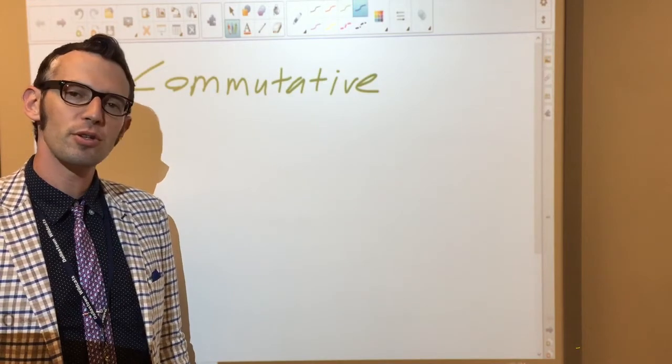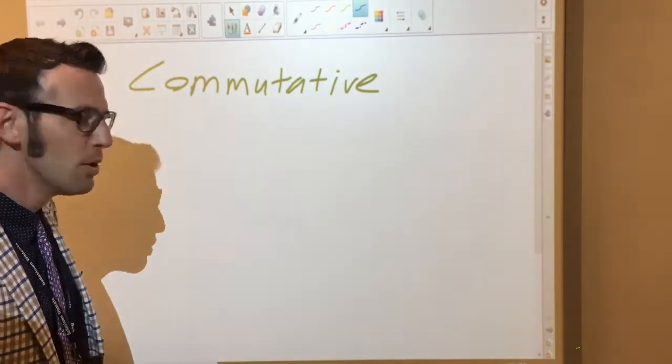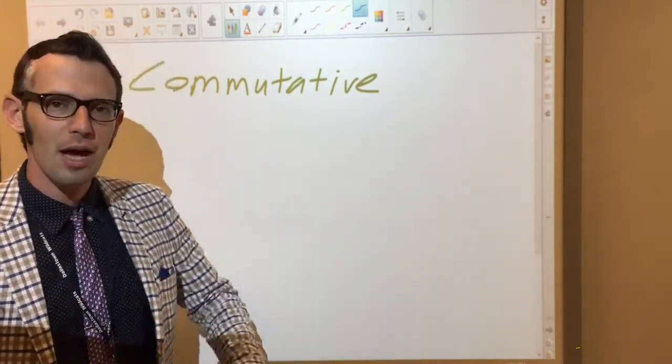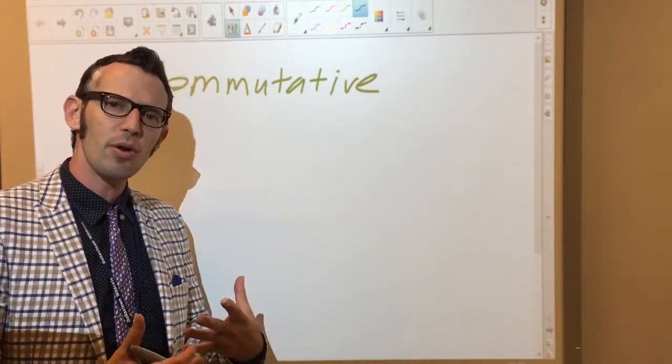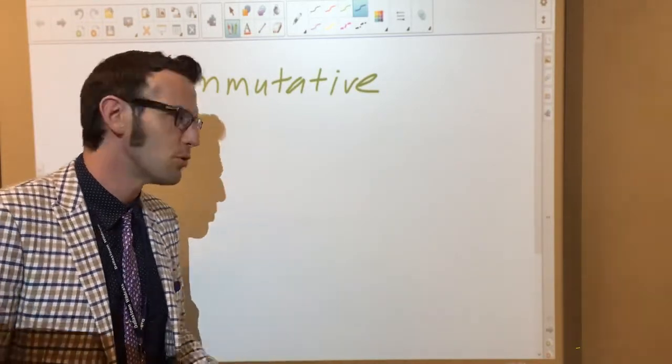Today I'd like to talk to you about the commutative, associative, and distributive properties, which are three properties that you probably use all the time in algebra but you may not realize it. I just want to give you a name for them and let you know how to recognize them when they're being put in use.